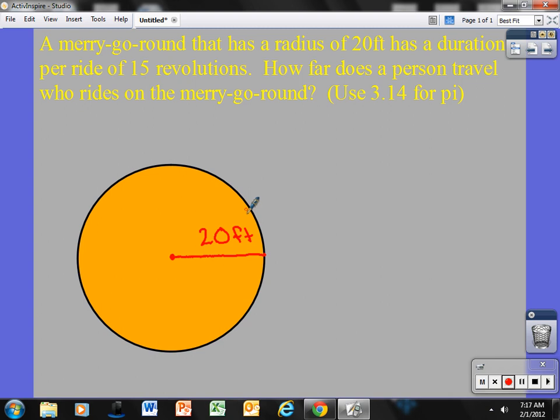Okay, it has a duration per ride of 15 revolutions. So, if I start here on the merry-go-round, essentially a revolution is the same as circumference. One complete revolution is that. Now, that's going to occur 15 times. How far does a person travel who rides on the merry-go-round? Well, if I want to figure out what is one time around the circle, I'm really just figuring out the circumference.